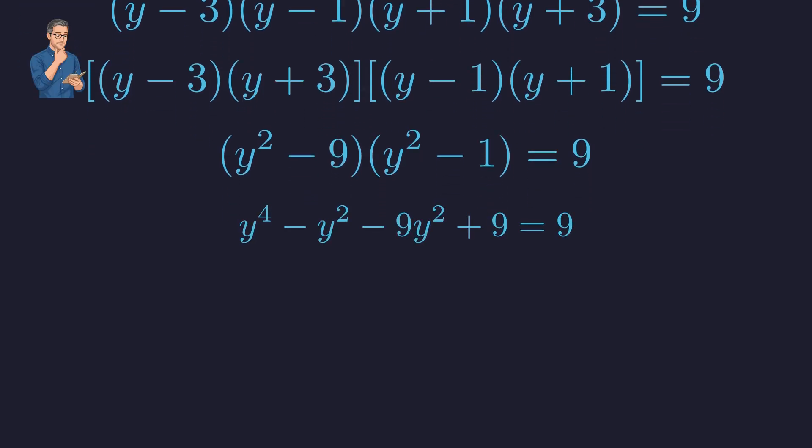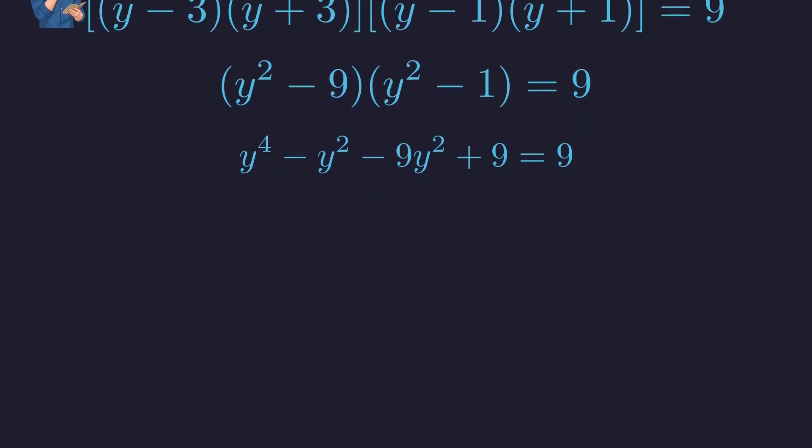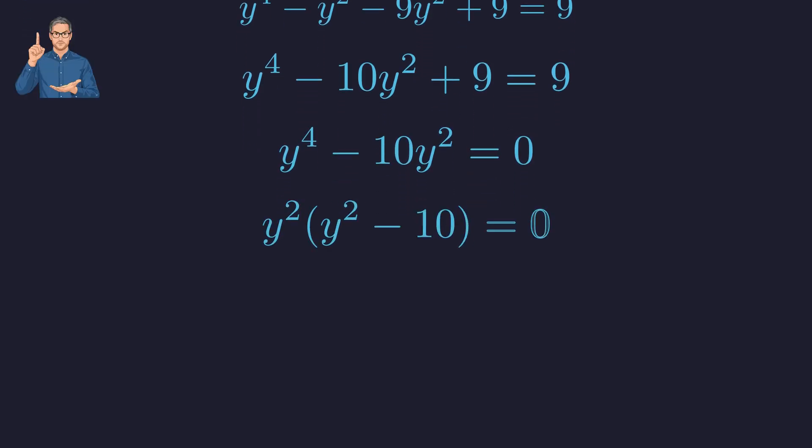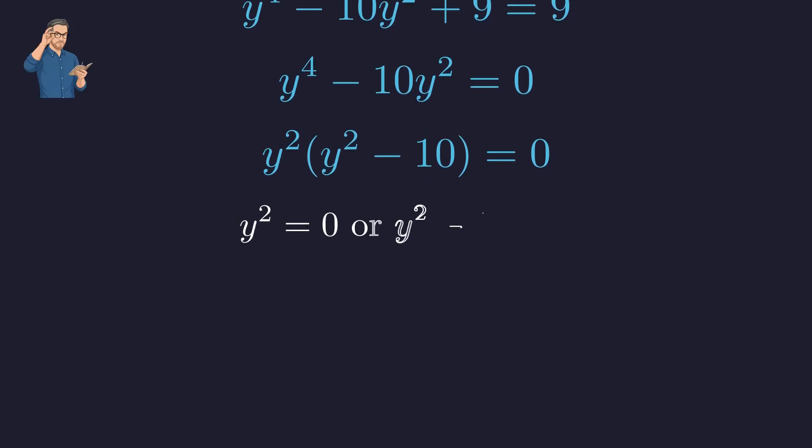Let's expand the left side completely. Combining the middle terms gives us a simple equation. Subtracting 9 from both sides leaves us with this. Next, we factor out a common term of y².